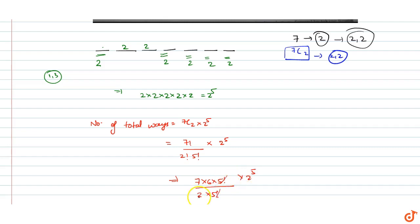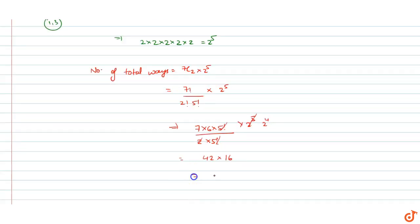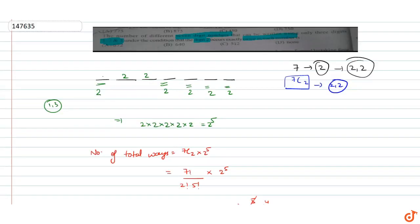5! cancel out हो जाएगा और यह हो जाएगा 2^4। अब 7 × 6 = 42, और 42 × 2^4 = 42 × 16 = 672। So our answer is 672 — option A is the correct answer।